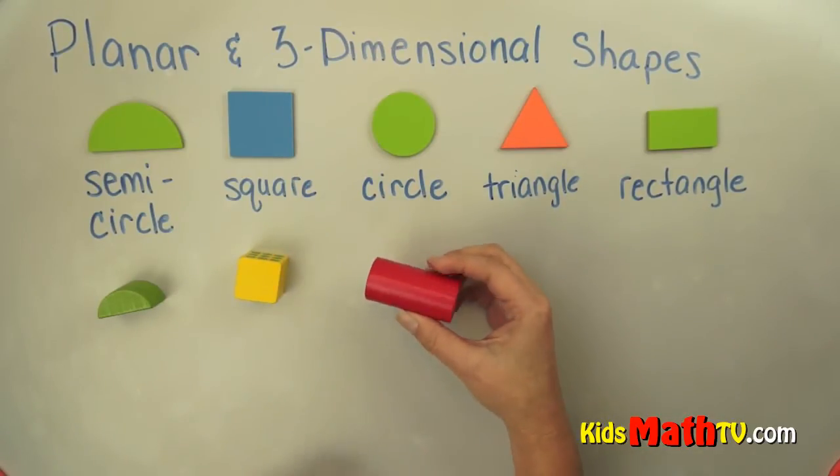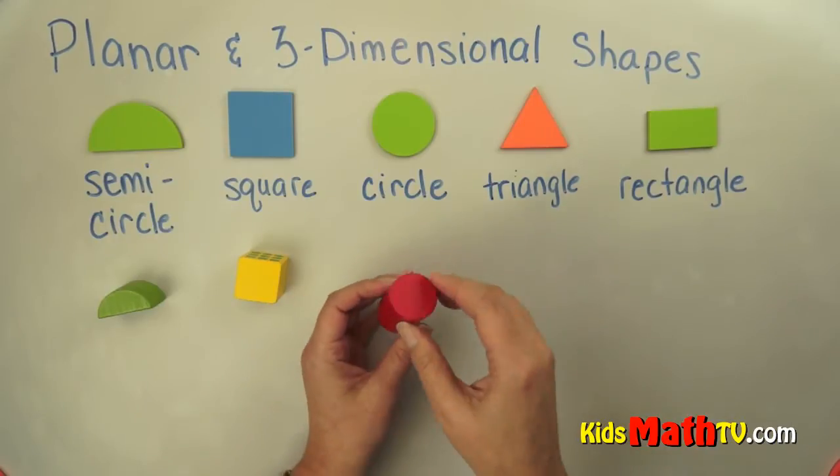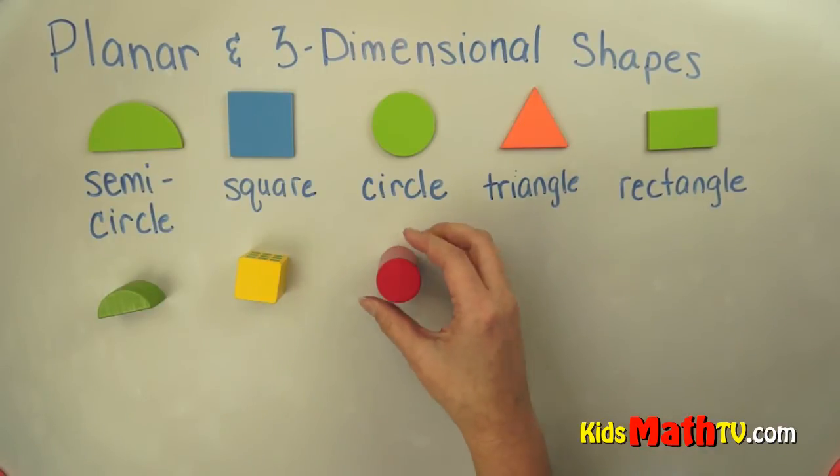Here we have this shape, it has a circle for both bases, but as you can see it would roll. So this one we would call a circular prism or a cylinder really is what we call this one if it's a circle.